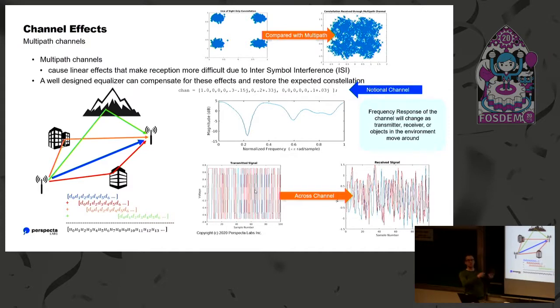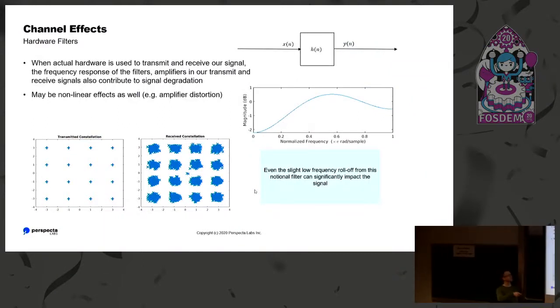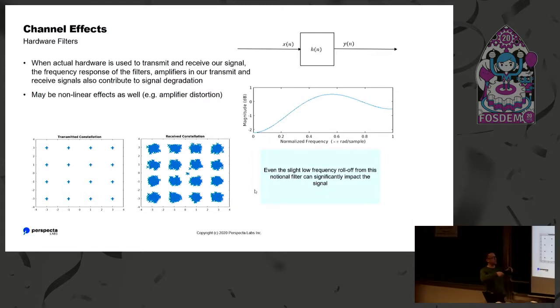Channel effects are the main reason that we need an equalizer. Another reason is the hardware filters. Even just slight roll-off is going to cause smearing of one symbol into the next. So you look at just something with a couple of dB on the edge, maybe you have some received filter, maybe you have some amplifier, maybe even some nonlinear things, amplifier distortion. It's going to cause smearing and spread out your constellation.